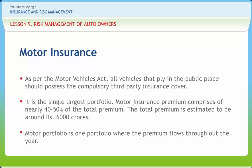Policies issued to cover imported vehicles belonging to embassies, consulates, etc. where the import duty element is not included in the IDV, the premium chargeable under Section 1 shall be loaded by 30%. Members of a Valid Auto Association get a discount of 5% of the OD premium, subject to a maximum of Rs. 50 for private cars and Rs. 50 for motorcycles. Discount for ARAI-certified anti-theft devices is 2.5% of the OD premium, subject to a maximum of Rs. 500. Vehicles confined to owned premises are available for a discount of 33.33% on the applicable tariff rate.